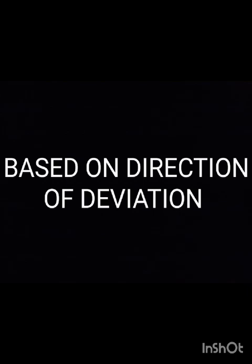Before starting the management for squint, we need to observe and confirm the type of squint that is present for the patient. We need to observe the patient's eye for the direction of deviation. Since the patient I have is orthotropic, there is no deviation present here.